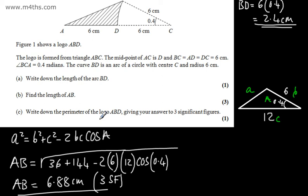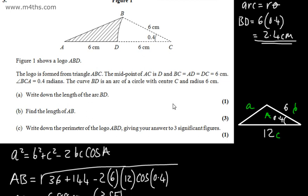In part C we need to write down the perimeter of the logo ABD giving our answer to 3 significant figures.